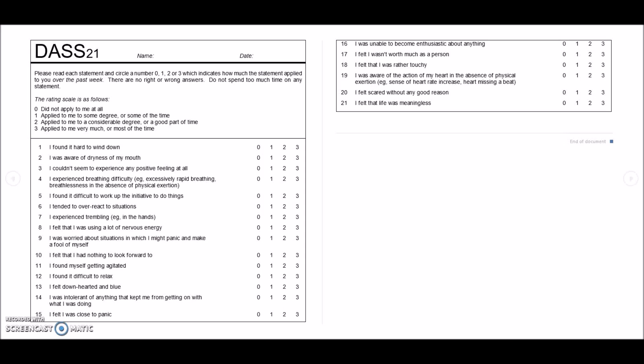If we look at the screening tool, this is what it looks like. The DASS is a 21-item questionnaire consisting of a depression scale, an anxiety scale, and stress scale with seven questions specifically tailored to each topic. The survey is 21 continuous questions so that the individual taking the survey does not know the different significance of each question.